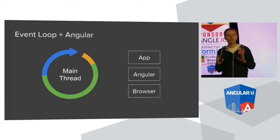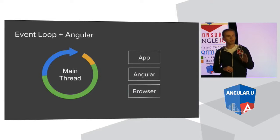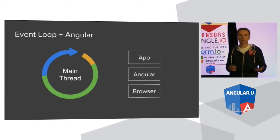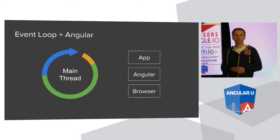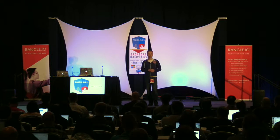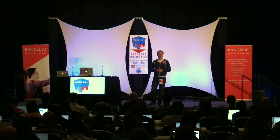In a typical Angular application, three entities fight over this scarce resource. We have the application doing business logic, data fetching, and calculations. Then we have the framework doing its internal bookkeeping, providing services, doing dirty checking, and DOM manipulation to update the view. Lastly, the browser needs to take all the DOM mutations and transform them into something visible to the user — recalculating positions, layout, and repainting anything that changed — plus garbage collection.